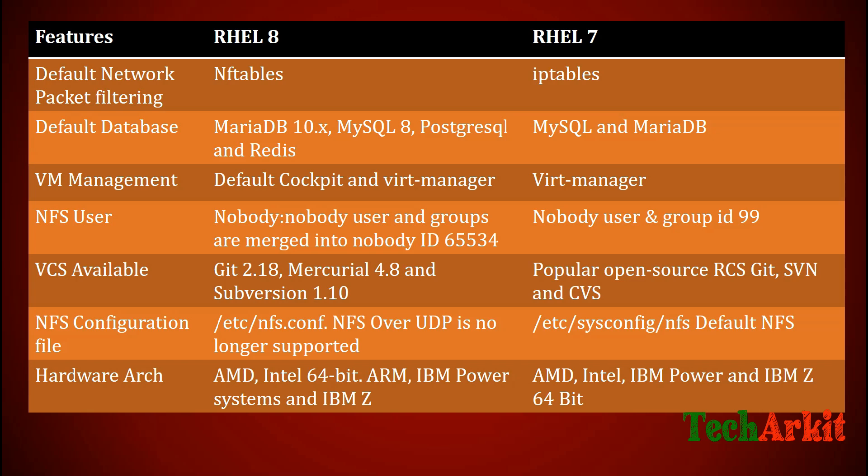NFS server UDP is no longer supported and is deprecated in RHEL 8. For hardware architecture, RHEL 8 supports a wide variety of platforms including AMD, Intel, ARM, IBM Power Systems, and IBM Z Systems.